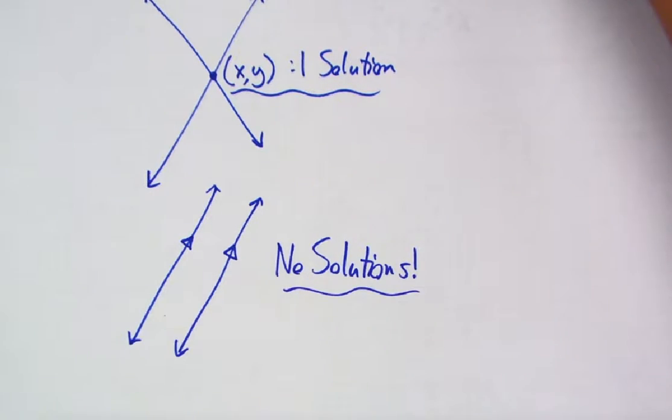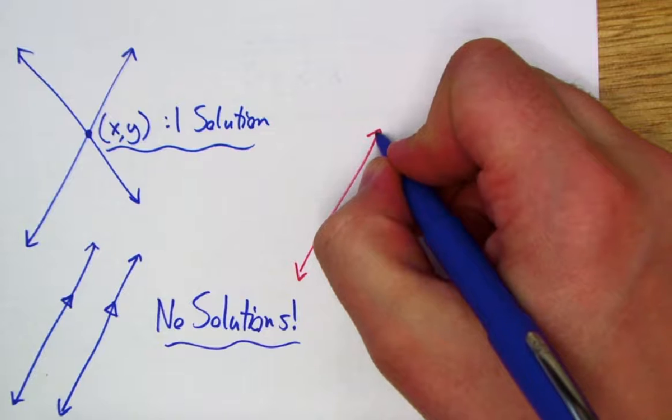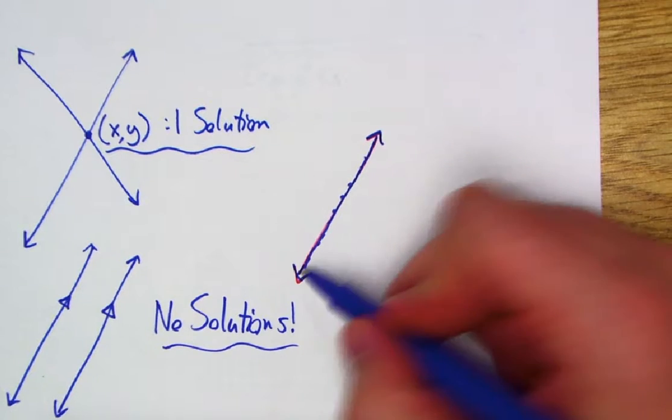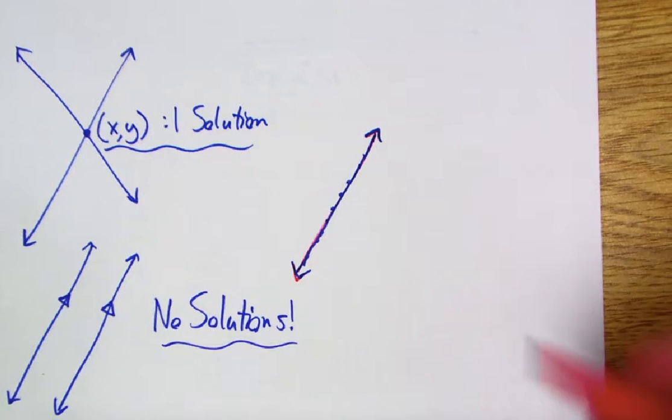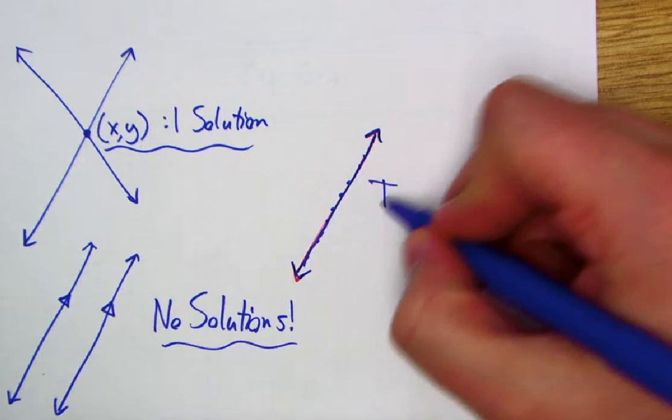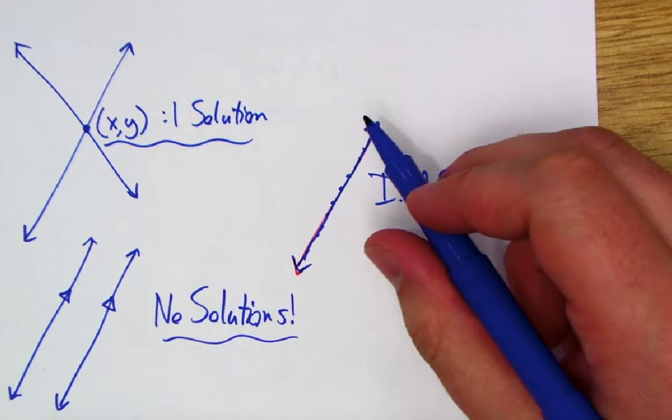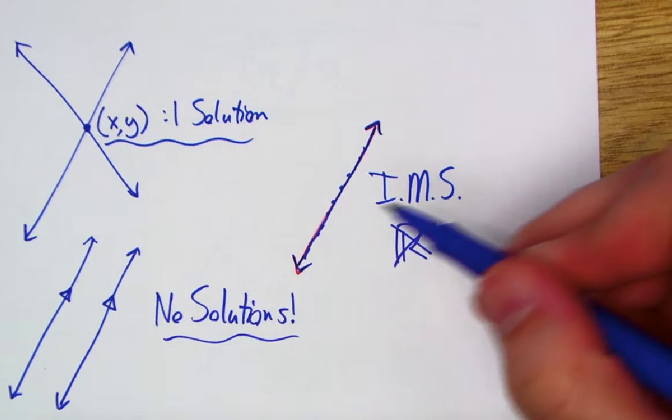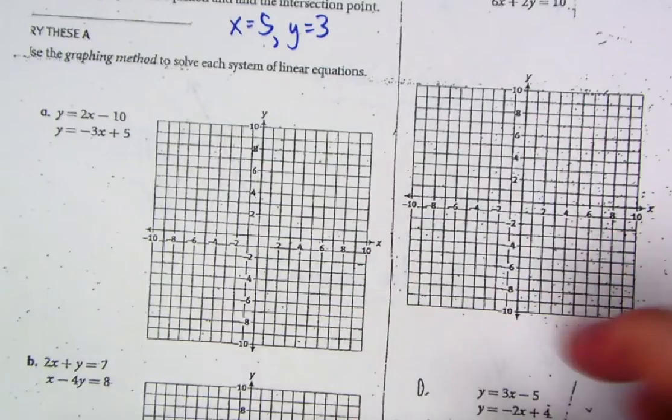And finally, perhaps you graph these and they just happen to be the exact same line. So you graph the original, the first one, and then you graph the second one, and they happen to overlap. Well, that would make basically any point infinitely a solution. Not any point on the coordinate plane, but any point on either line. So this is an example of what we would refer to as IMS, infinitely many solutions. Do not put all real numbers, because all real numbers would indicate, in this case, maybe like all points on the entire coordinate plane work, and that's simply not true.